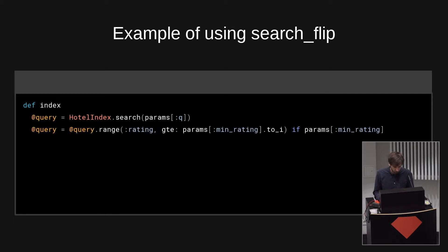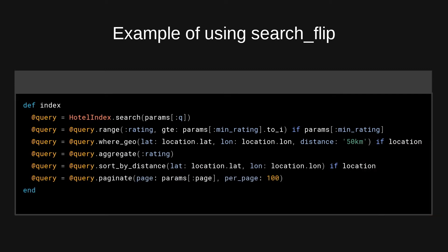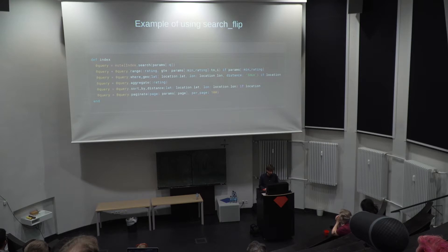Just to give you an example of what the query looks like with these chainable features: say we are a booking platform with a hotel index, and we have a params session that says we only want to receive hotels which have a minimum ranking. We search for a certain geolocation such that the hotels need to be near our current location, we aggregate over ratings to show some nice counts on the sidebar, and paginate through the results.